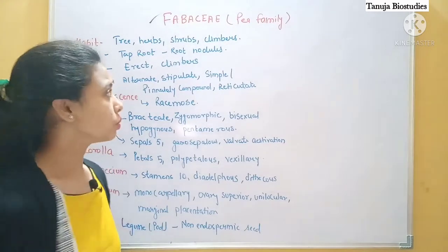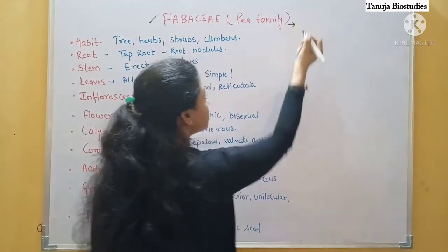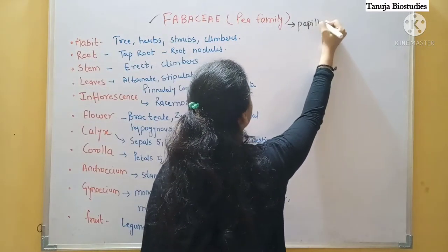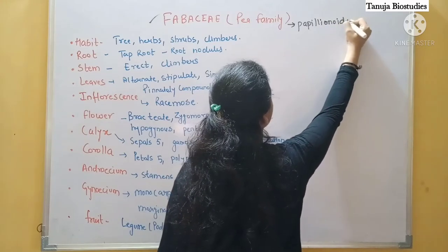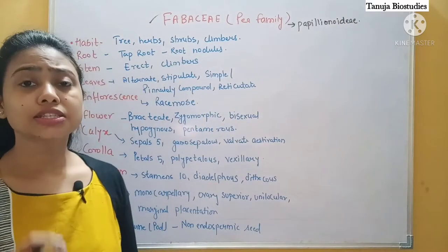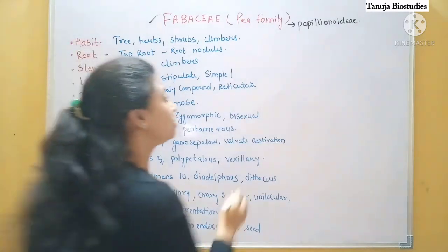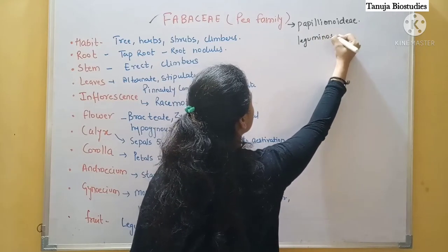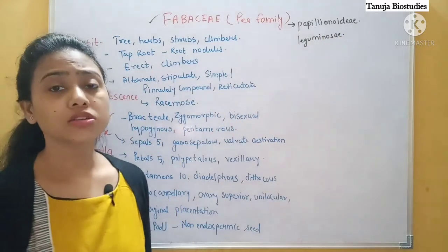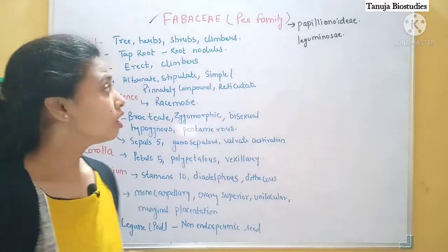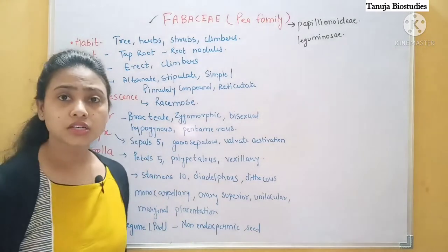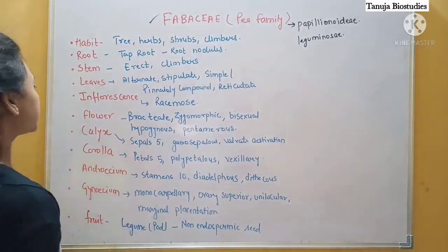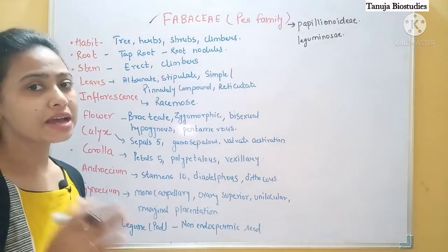Earlier, this family was considered to be called Papilionoideae. But later on, it was reclassified as a sub-family of the family called Leguminosae. So they belong to Leguminosae, and we will understand the characteristics through the example of the pea plant. First we will understand all the characteristics, then we will see the diagram as well as the floral formula.